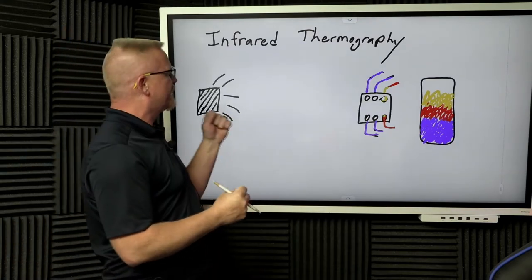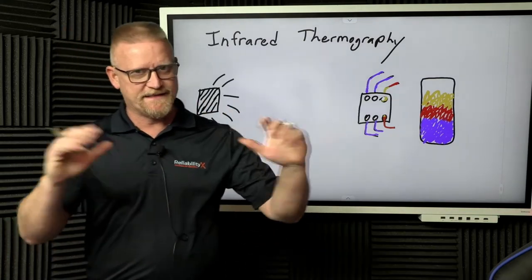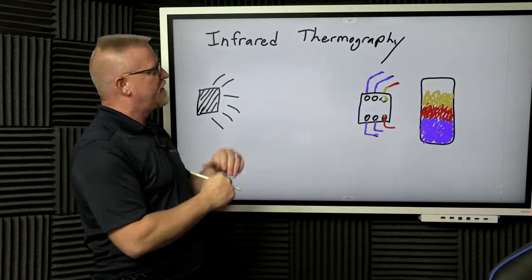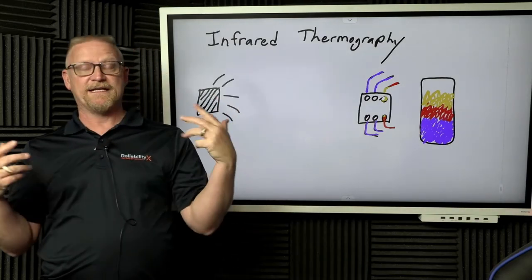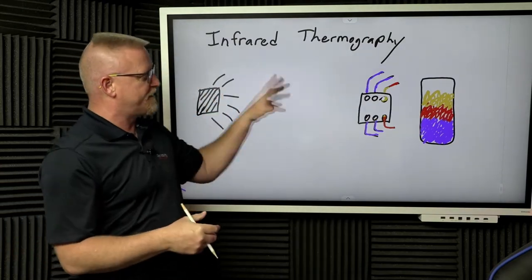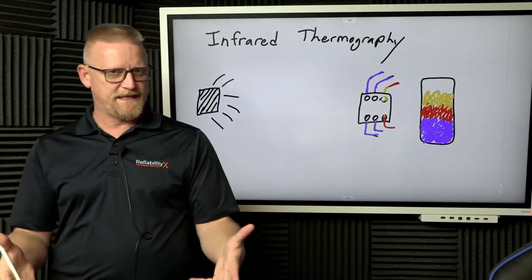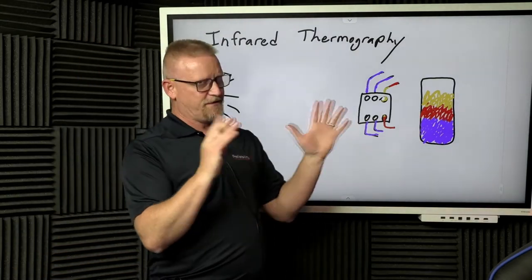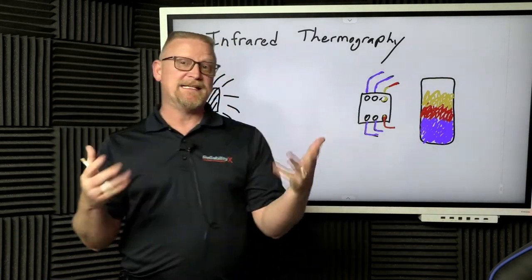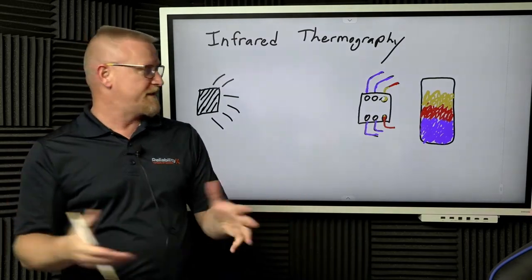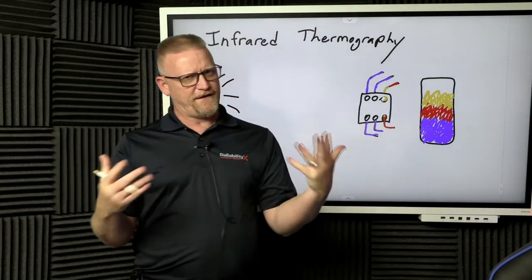Any object above zero Kelvin is emitting infrared radiation, and this camera can detect that infrared radiation and convert it into a visual signal that can then, based on other variables, be seen as a heat signal or temperature signal. It looks at various things,